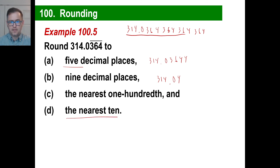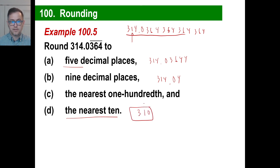The nearest 10? There's our 10 unit right there. Since this is not a 5 or greater, we're going to round down. So we'll have 3 hundreds and 1 ten — 310 is our answer for that.